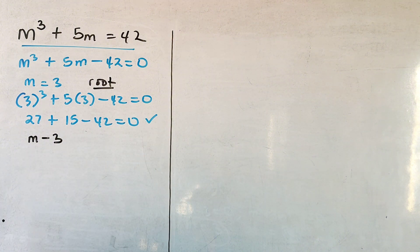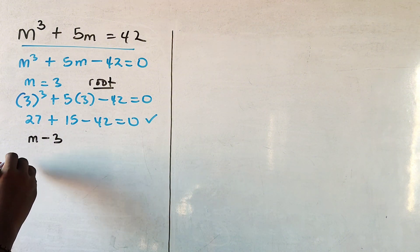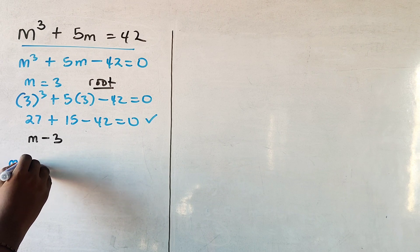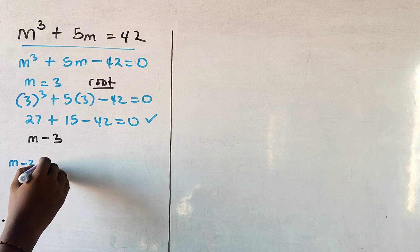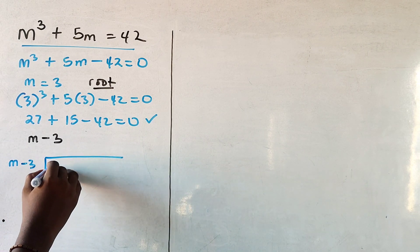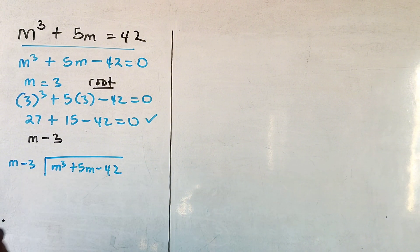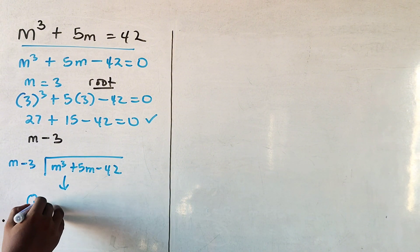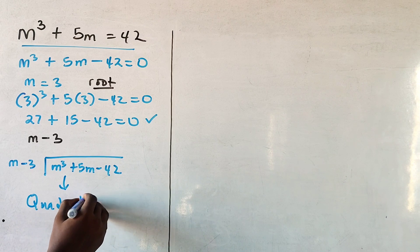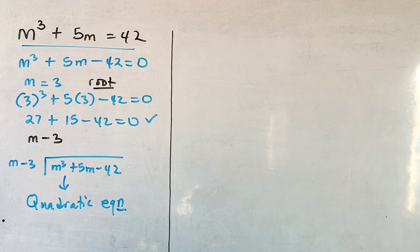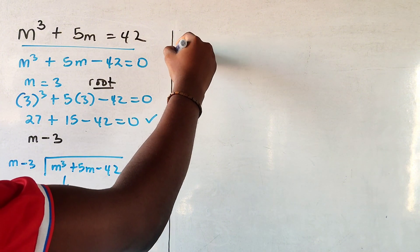So you're going to go ahead and do m minus 3, you're going to divide this m cubed plus 5m minus 42. What you get here is a quadratic equation, and you can solve your quadratic equation through any of your quadratic methods.